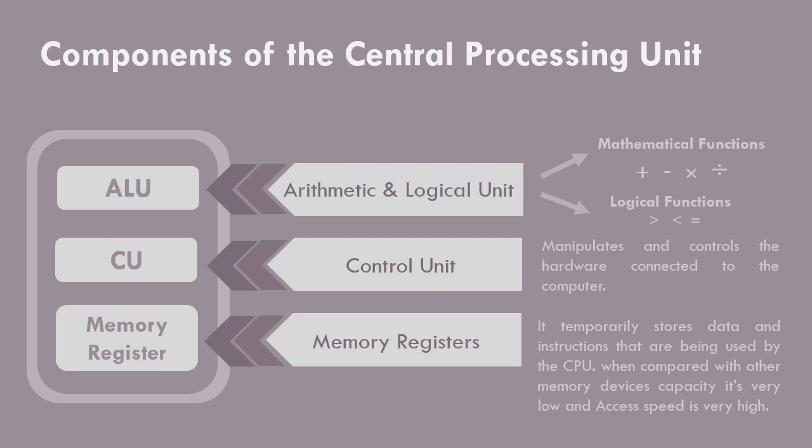Second, CU — Control Unit — which communicates between, manipulates, and controls the hardware connected to the computer. Third, memory registers, which temporarily store data and instructions that are being used by the CPU.